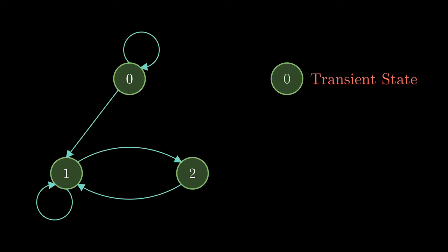Now let's focus on state 1. Here's a random walk starting from this state. We can clearly see that after some time, we are bound to revisit state 1. So in this case, the probability of coming back to state 1 is 1.